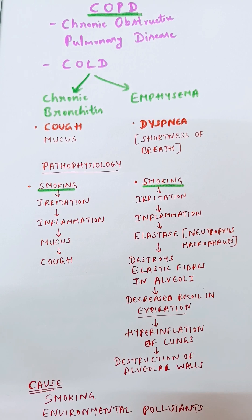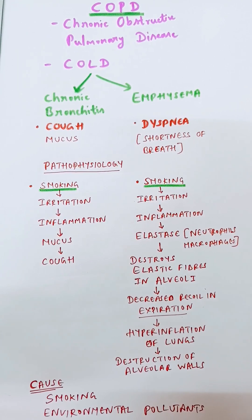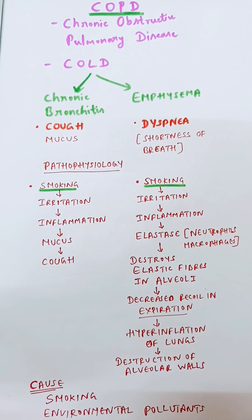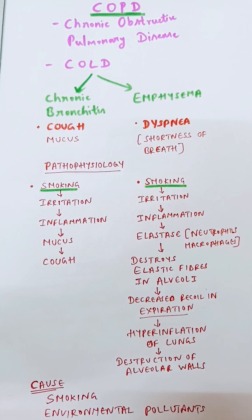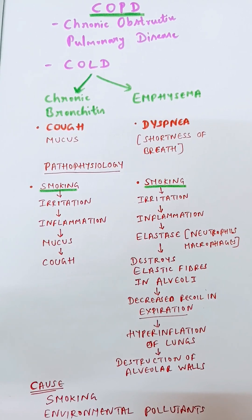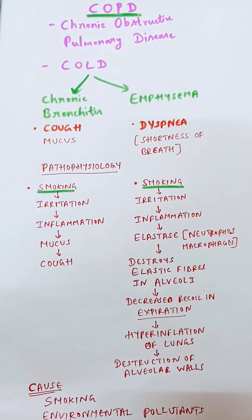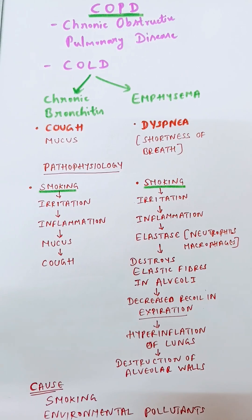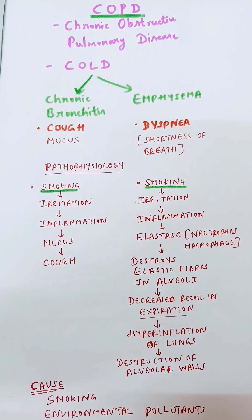In emphysema, smoking will lead to irritation and inflammation. Because of this, the WBCs will release a protease enzyme called elastase, which will destroy the elastic fibers. So during expiration, the lungs will not recoil back, leading to hyperinflation of the lungs and destruction of alveolar tissue.